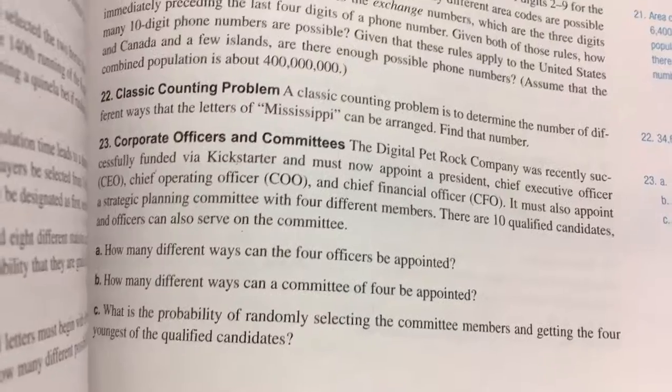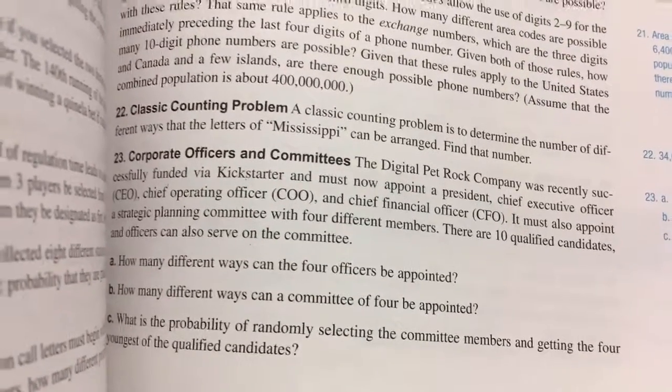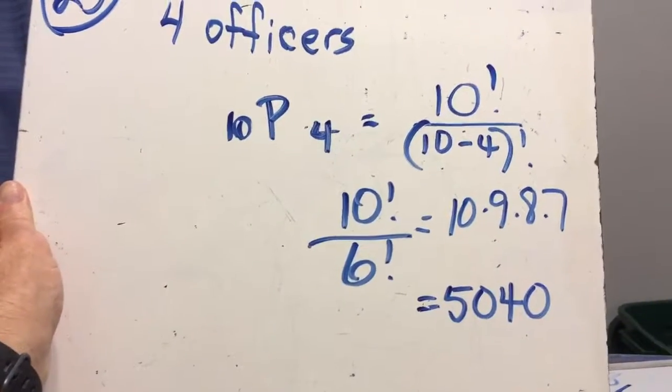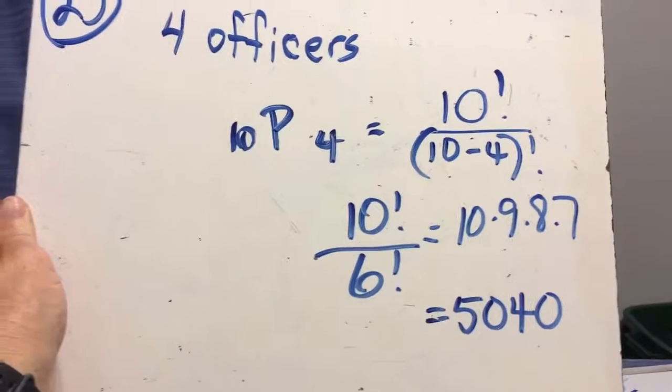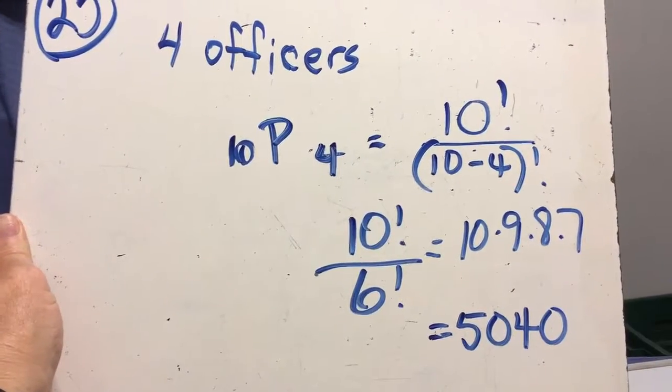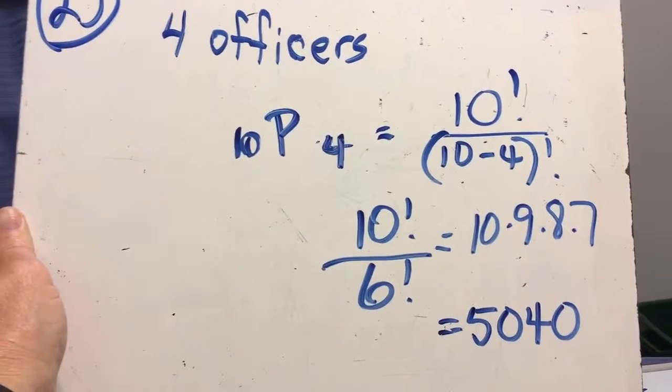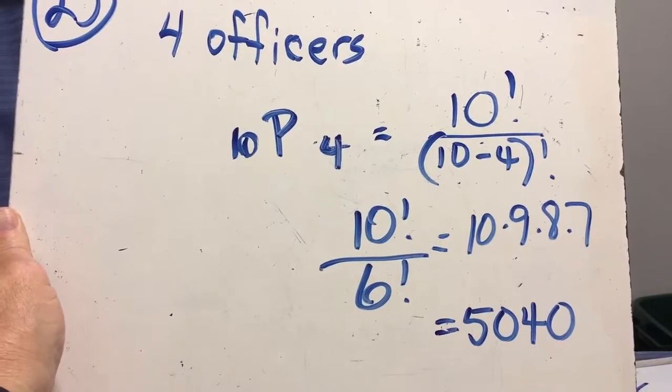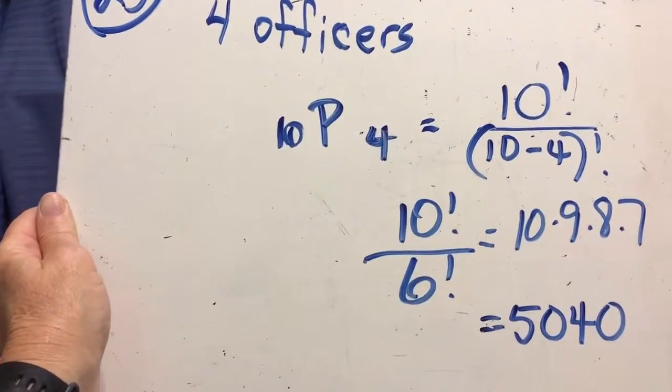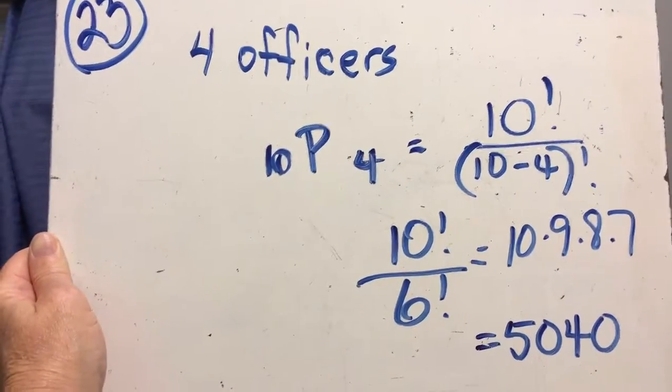Here's the choosing of the officers. Permutation, 10 things taken four at a time, is 10 factorial over 10 minus 4 factorial, which is 10 factorial over 6 factorial. The 6 factorials cancel, and we end up with 10 times 9 times 8 times 7, which is 5,040 different ways to choose the four officers. And that is correct in your answer key.